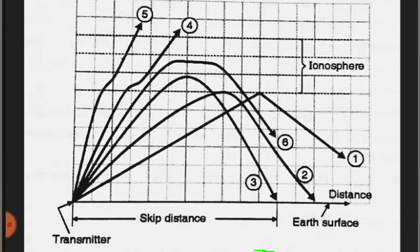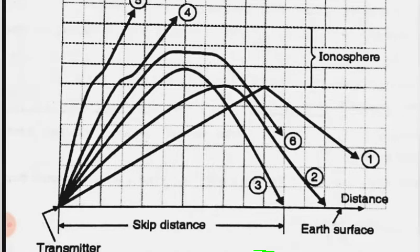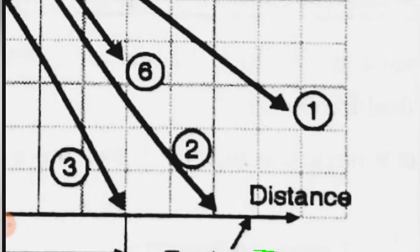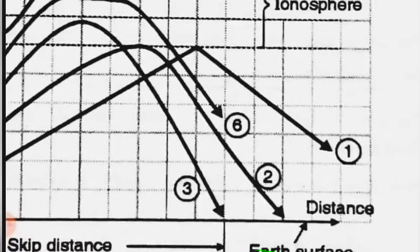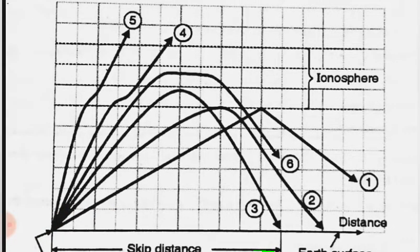The frequency should be greater than the critical frequency. Next, consider the effect of variation in the angle of incidence theta while keeping the frequency constant. The angle of incidence is quite large for ray 1 and is progressively reduced, as represented by rays 2 and 3.